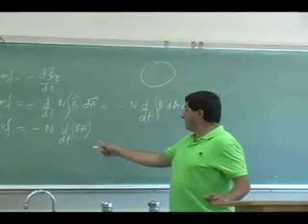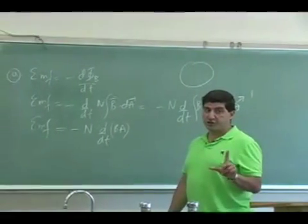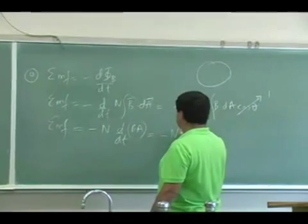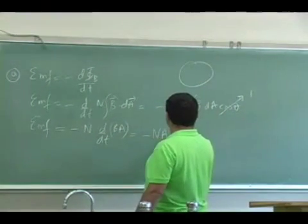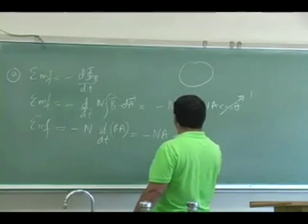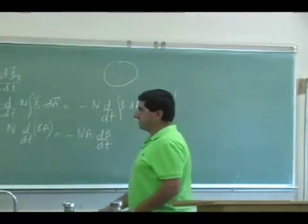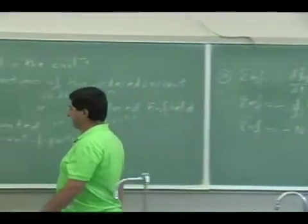And the area is not changing as a function of time. Only the B is. So the A also comes out. And so you have negative N A dB dt.